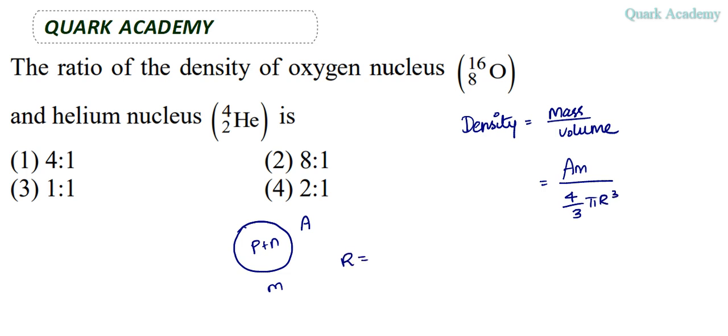Now, this radius of the nucleus can be written as r0 times A power 1 by 3. So r0 is a constant. A is again the mass number. So let's substitute this here.